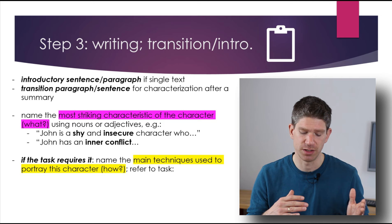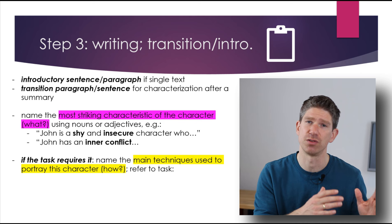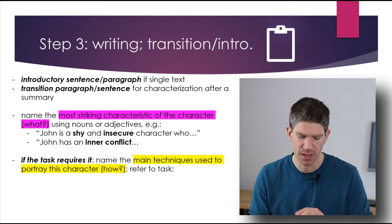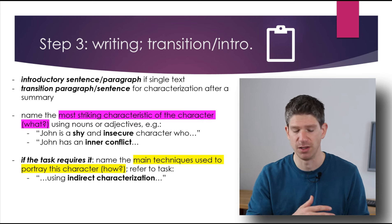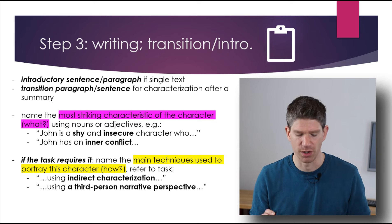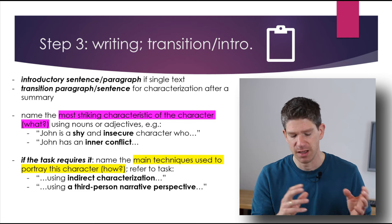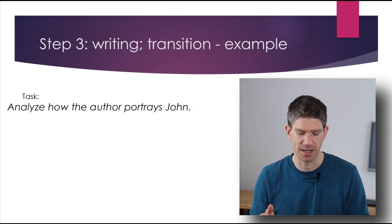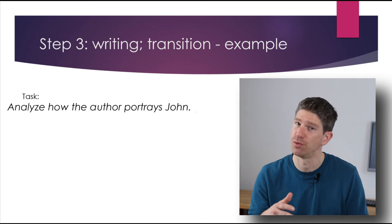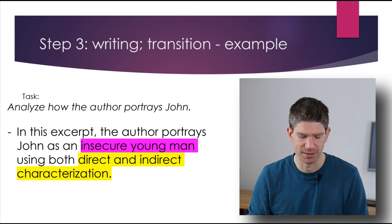If the task requires it to look at the how, as I said above, so more of an analytical focus on how has the author created this character, you should refer to that. So for example, if it's said how does the author do it, you could say he uses indirect characterization. Or when it asks what kind of role does the narrative perspective play, you could say by using a third person narrative perspective, the author, etc. Say the task we're given is analyze how the author portrays John. So this would mean focus on the what and the how. In this excerpt, the author portrays John as an insecure young man using both direct and indirect characterization.